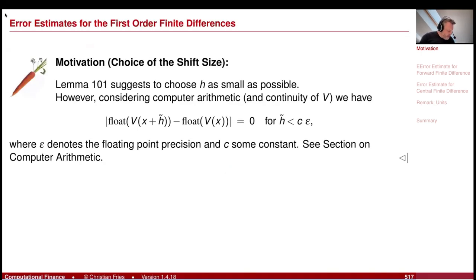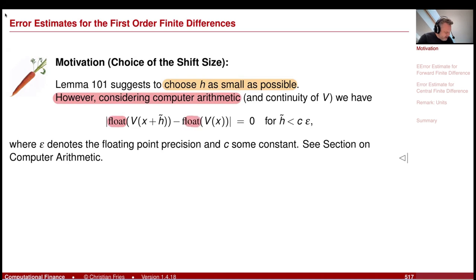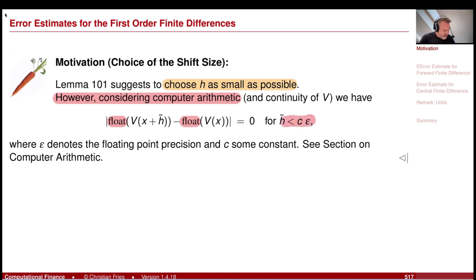The motivation is Lemma 101. The Taylor expansion error term suggests we should choose our shift size as small as possible. However, computer arithmetic gives us floating-point rounding of the results — the upshifted value and the downshifted values are rounded, introducing an error. The finite difference, upshifted minus downshifted divided by h, amplifies that rounding error. In the worst case, if the shift is so small that both values are rounded to the same value, we calculate a derivative of zero.